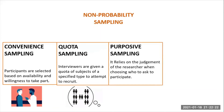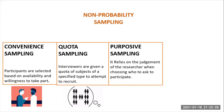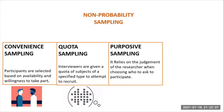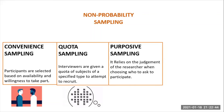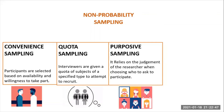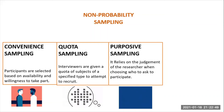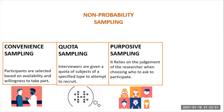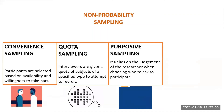Purposive sampling, also known as judgmental or subjective sampling, relies on the judgment of the researcher when choosing who to ask to participate. Researchers may implicitly choose a representative sample to suit their needs, or specifically approach individuals with certain characteristics. This approach is often used by the media when canvassing the public for opinions, like Facebook polls, and also in qualitative research methods.